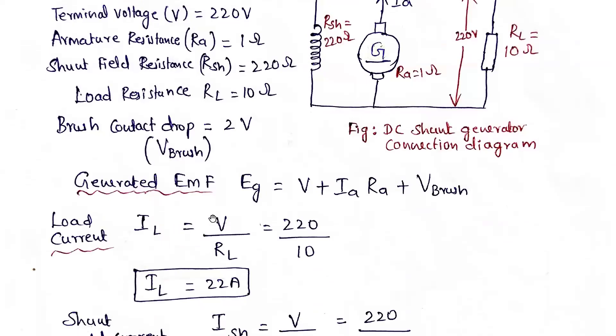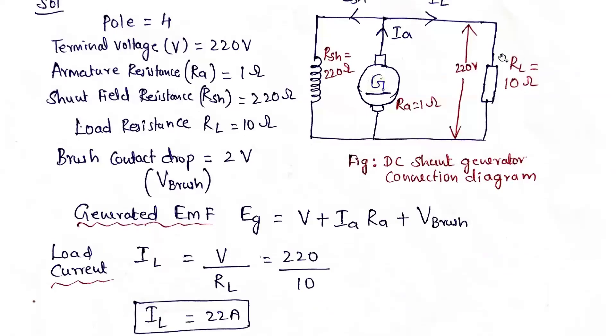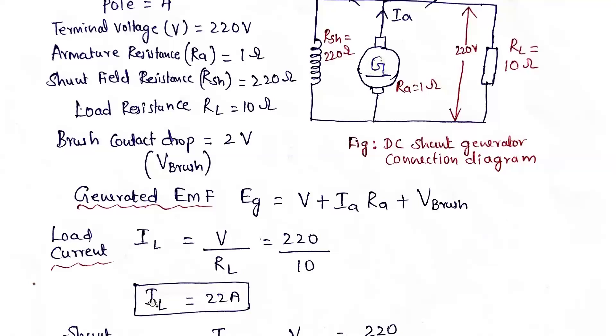Load current IL equals terminal voltage V divided by load resistance RL. So 220 divided by 10, we will get load current as 22 amperes.